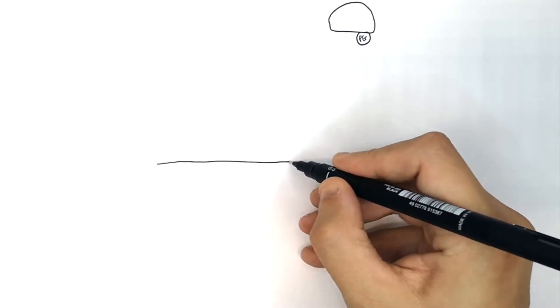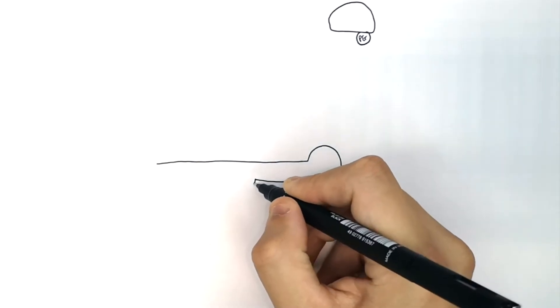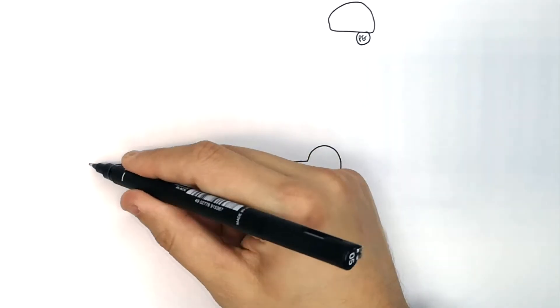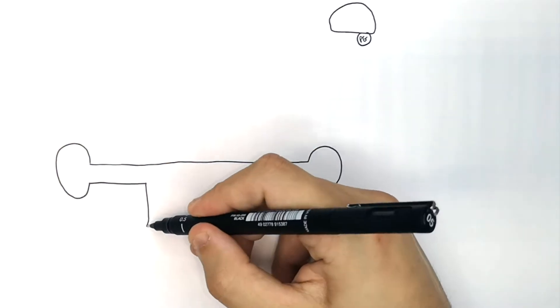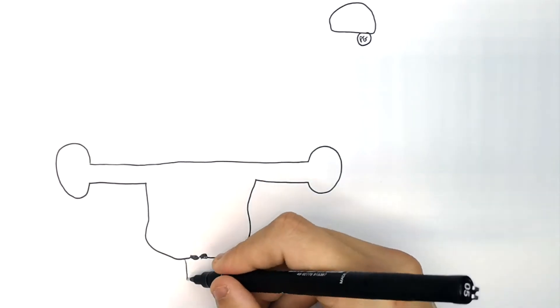I've drawn the pituitary gland beneath the brain, and this is the female reproductive system, including the ovaries, the uterus, the oviduct, the cervix, and the vagina.